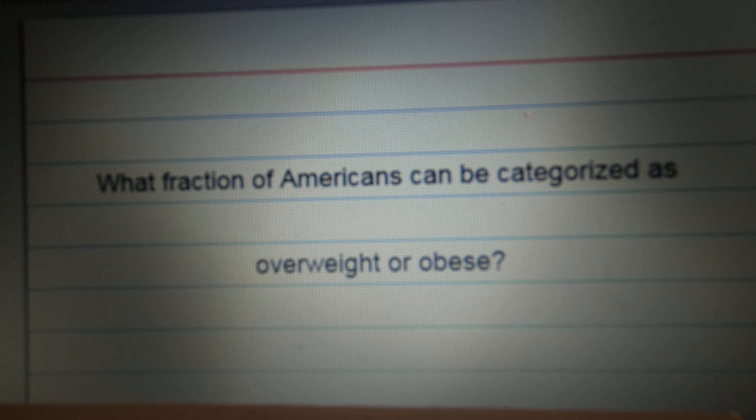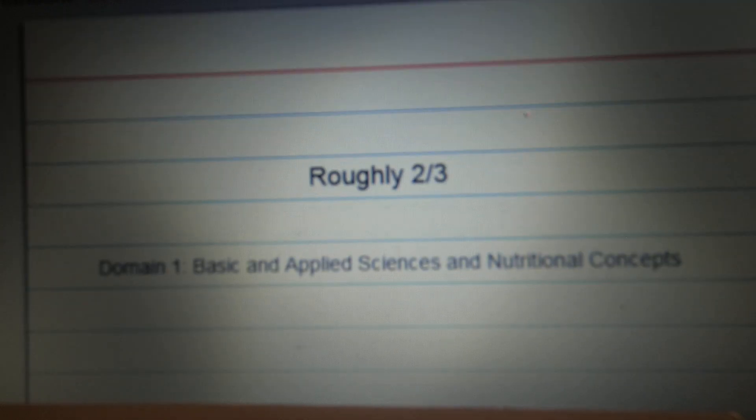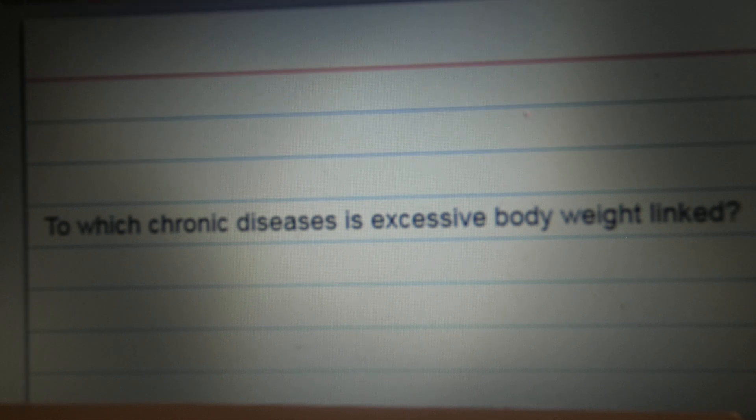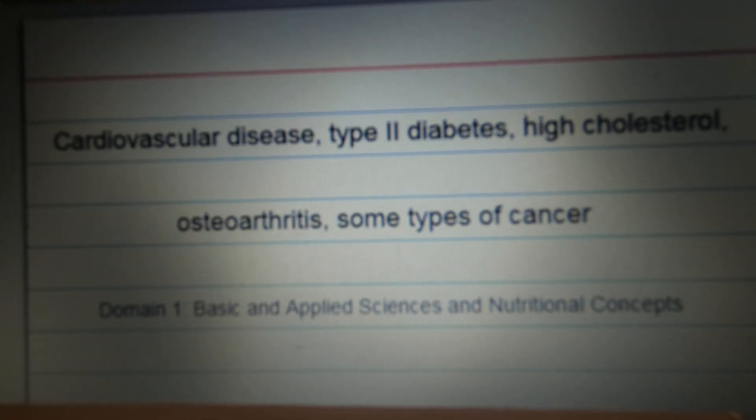What fraction of Americans can be categorized as overweight or obese? Roughly two-thirds. Which chronic disease is excessive body weight linked? Cardiovascular disease, type 2 diabetes, high cholesterol, osteoarthritis, some types of cancer.